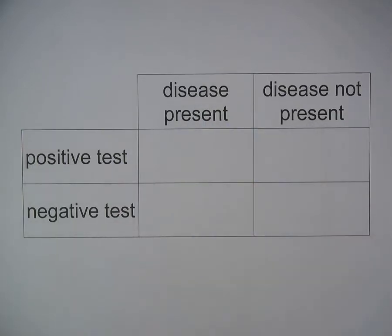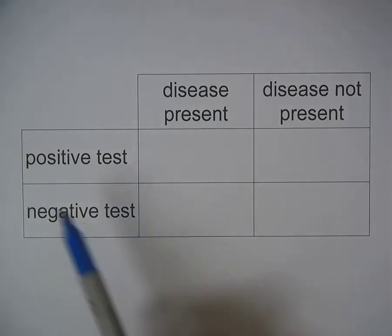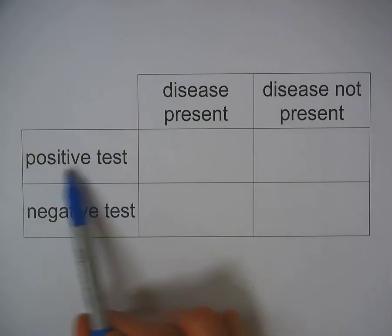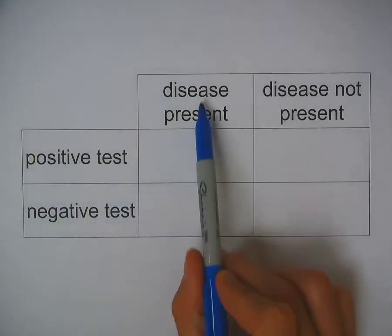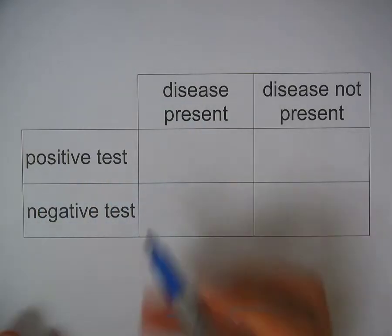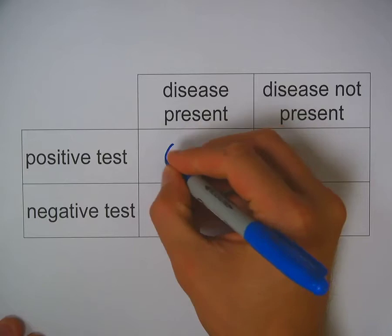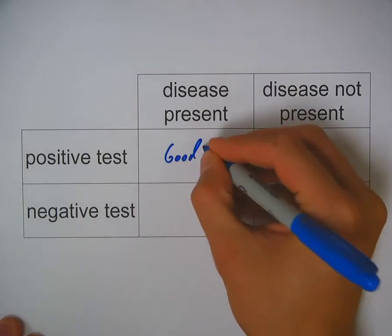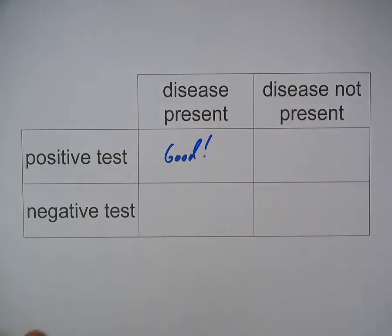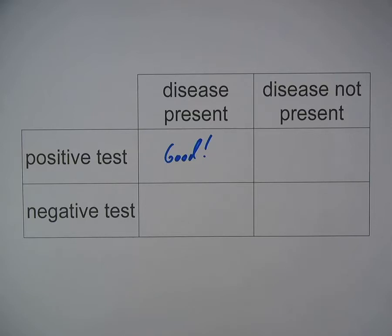Let's think about which of these outcomes would be good and which would be bad. If we take a look at the first one — a positive test when the disease is present — that outcome is good. If the dog actually has the disease, you want to know about it. It's good if they test positive so you can actually get the treatment that the dog needs.